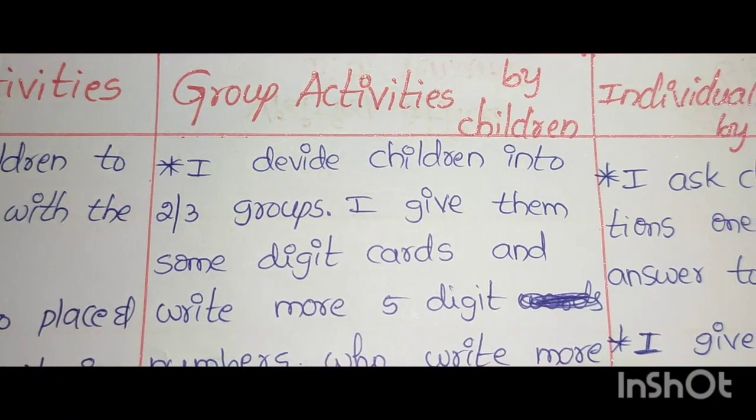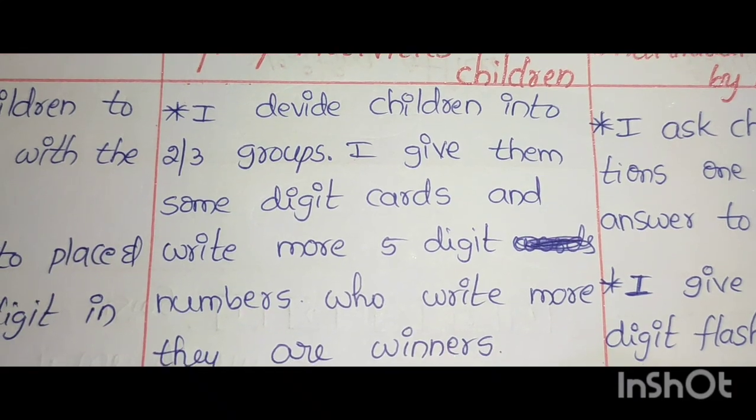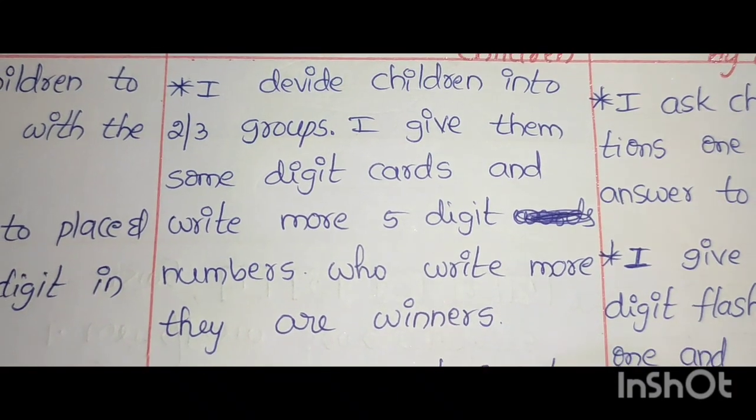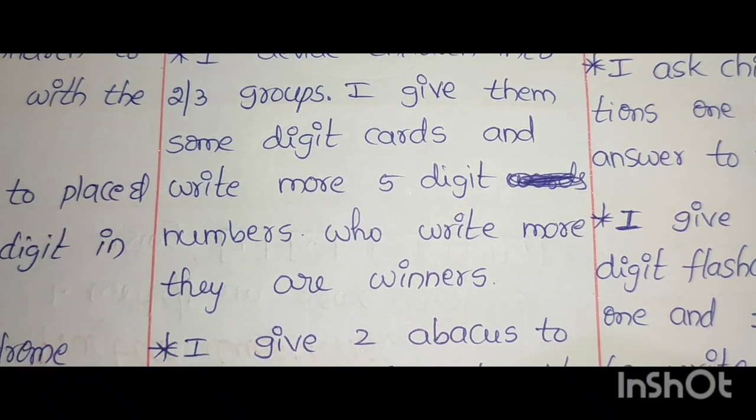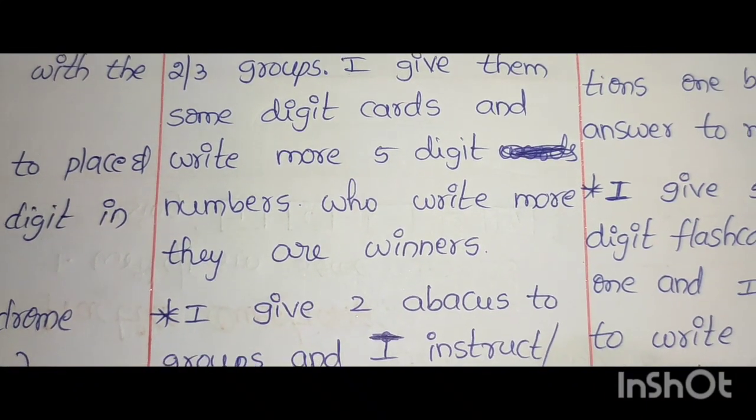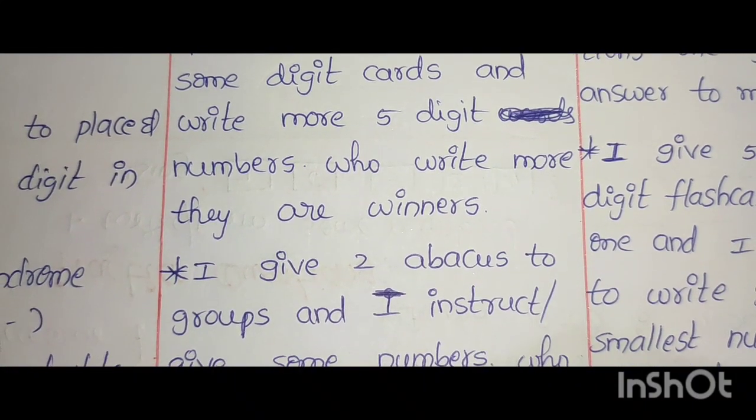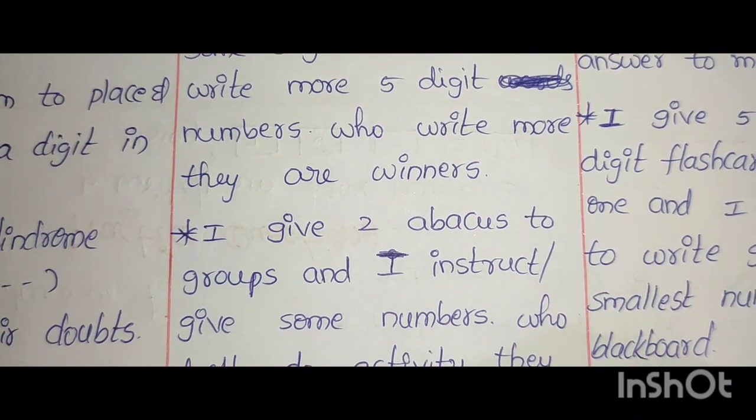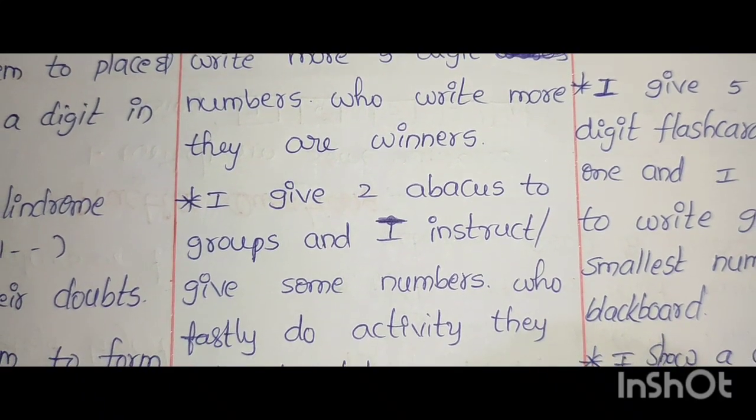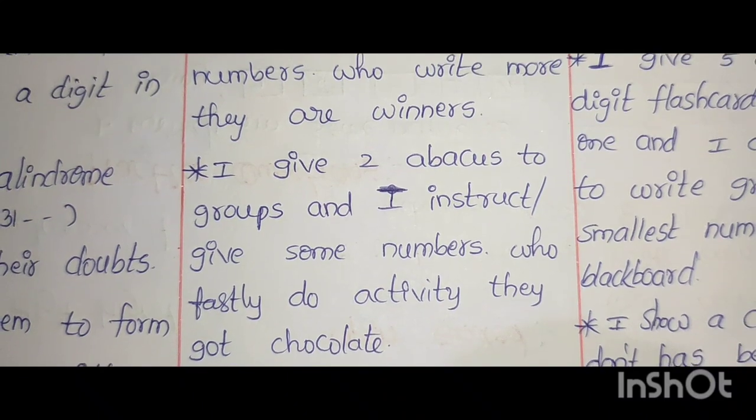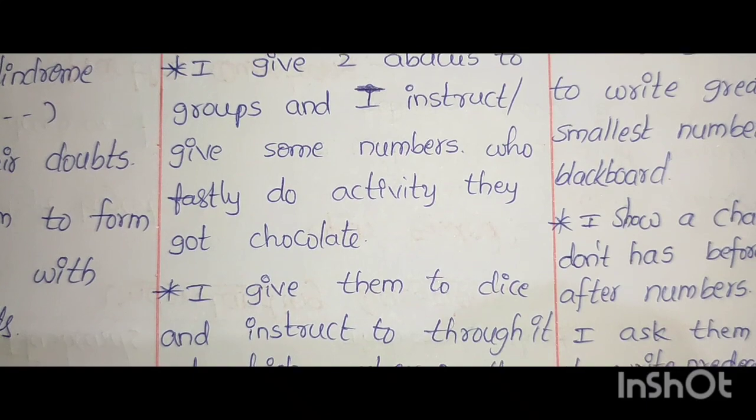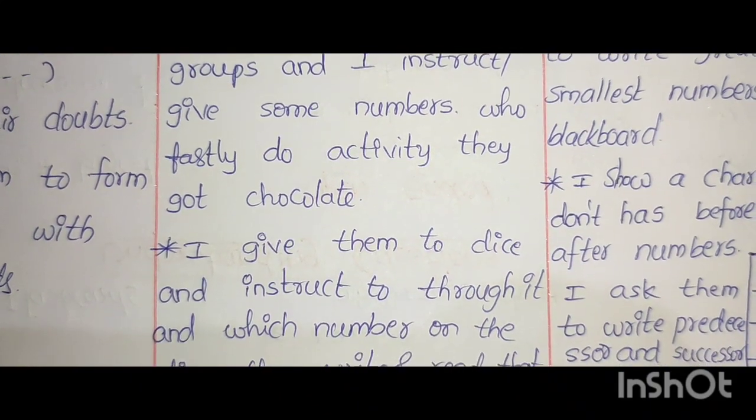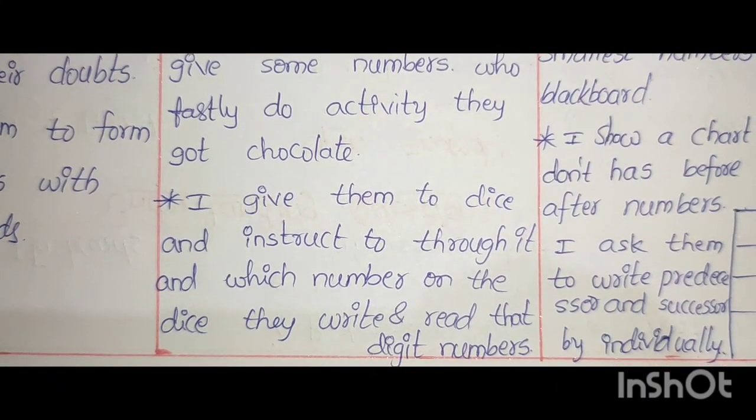Next group activities: I divide children into 2 or 3 groups. I give them some digit cards and write more 5 digit numbers. Who write more, they are winners. I give 2 Abacus to groups. I instruct or give some numbers. Who fastly do activity, they got chocolate. I give them dice and instruct to throw it. And which number on the dice they write and read that digit numbers.